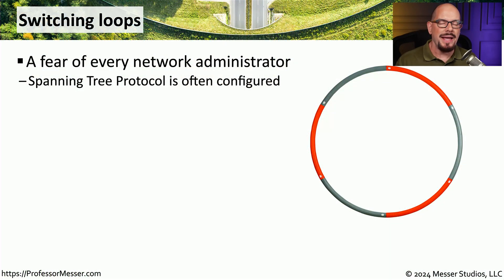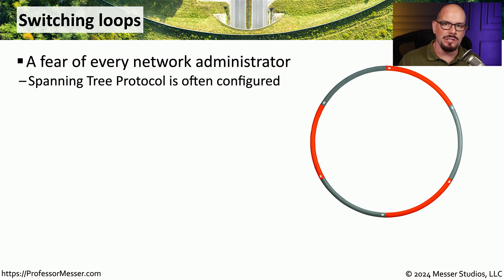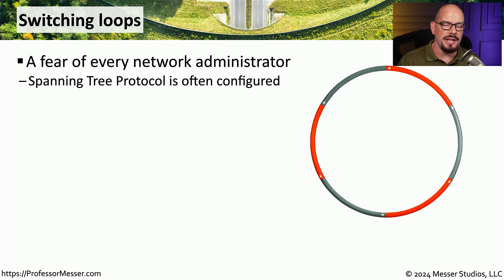As you're probably aware, at the MAC address level, there's no mechanism for counting how many times a frame might be seen on a network. For that reason, we have to be very careful that we don't create a loop on our switch network, because those frames will continue to circle around that network until you unplug one of those connections. That's one of the reasons it's so important to have spanning tree enabled on your network so that any potential loop could be stopped before that traffic starts looping.